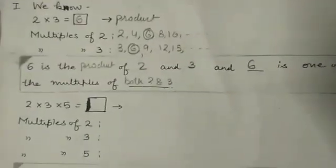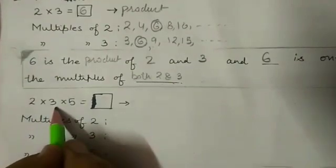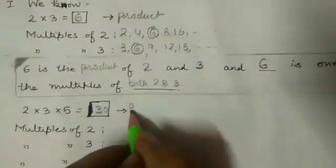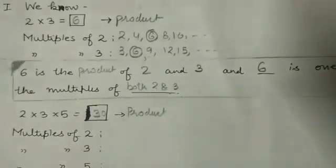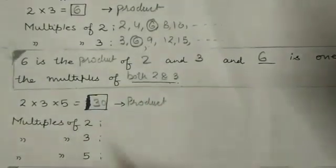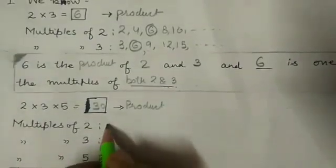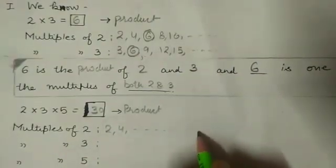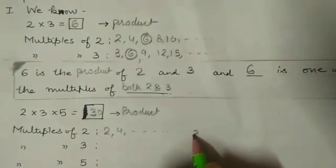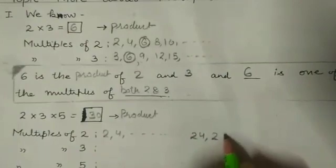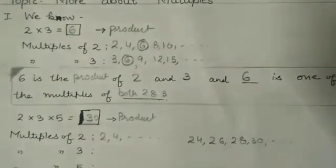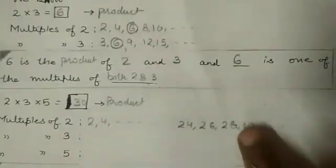Let us take one more example. 2, 3, 5 is 30. That is the product of 2, 3 and 5 is 30. Now let us write the multiples of 2: 2, 4, 6, 8, 10, 12, 14, 16 and so on, 24, 26, 28, 30 and so on. So many multiples are there.